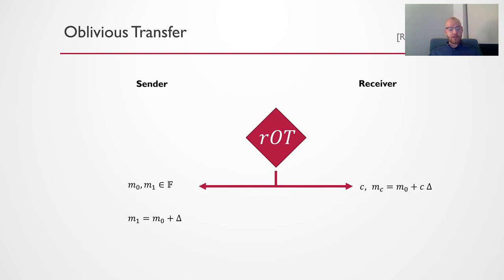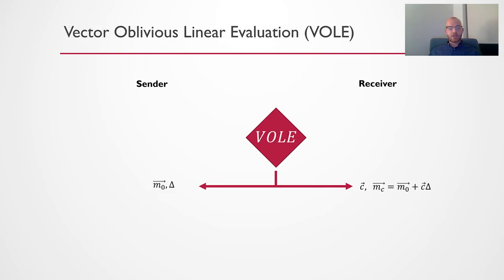Further, we can consider a slight variant where the messages M0 and M1 are offset by some delta. Then you can rewrite the receiver's message MC as M0 plus C times this delta value. This naturally generalizes to something known as oblivious linear evaluation. Here, the key distinction from OT is that C, the choice bit, is allowed to be a field element instead of just binary. We can further generalize this to what is known as vector OLE. Here, the message M0 is a vector of messages. And similarly, the choice value C is now a vector.